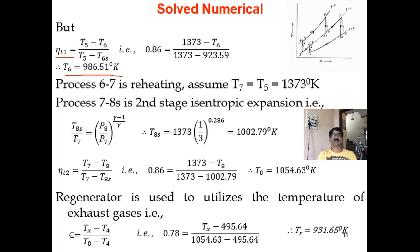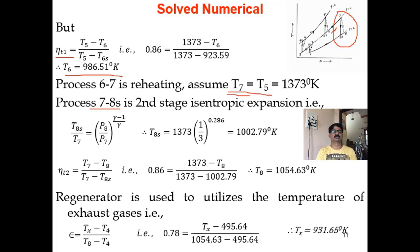Process 6 to 7 is reheating. Since no reheating efficiency is given, assume perfect reheating: T7 = T5 = 1373 K. For second stage expansion 7 to 8S: T8s/T7 = (P8/P7)^((γ-1)/γ). Since P7/P8 = 3 (same as P2/P1), P8/P7 = 1/3. T8s = T7 × (1/3)^((γ-1)/γ) = 1002.79 K.